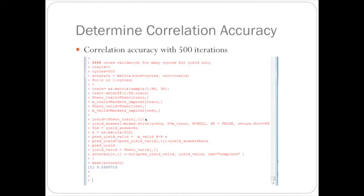And the accuracy for yield with just one iteration from before was about 0.2, but running at many after 500 iterations, the better estimate was 0.23. So it's not a big change, but it's definitely a better estimate.